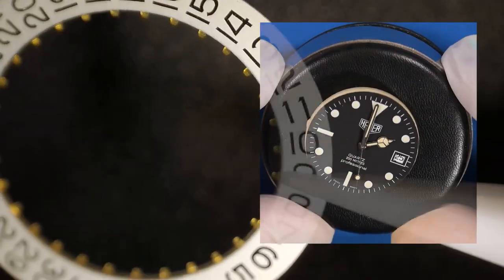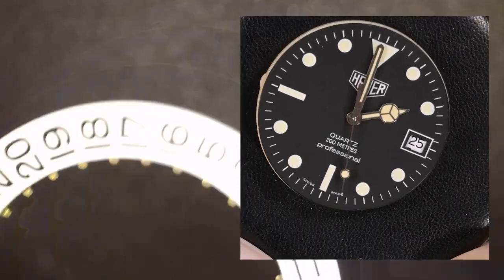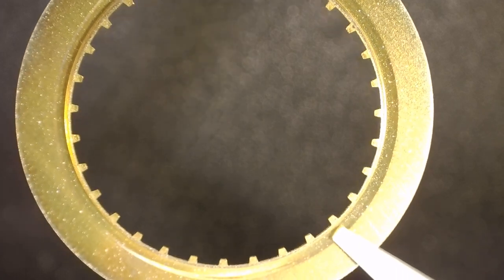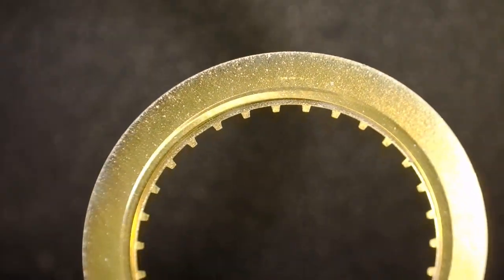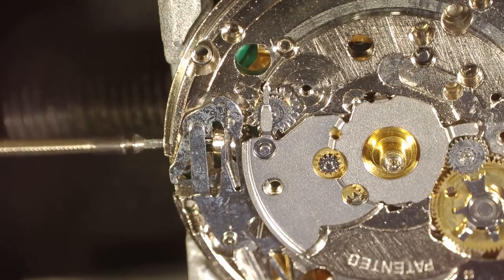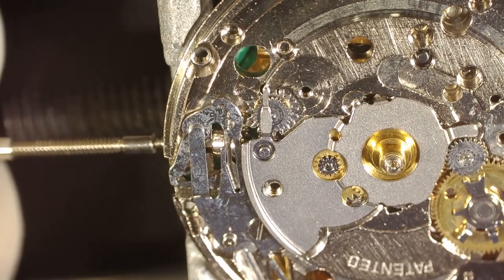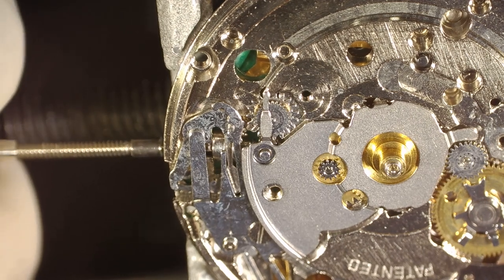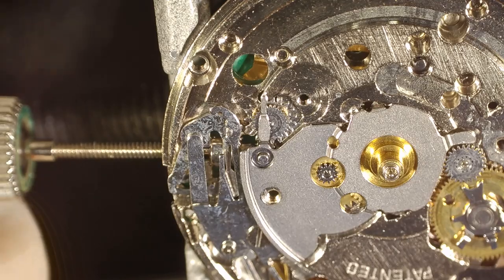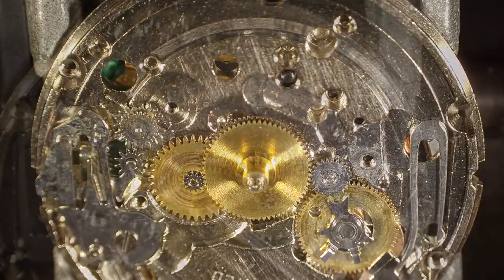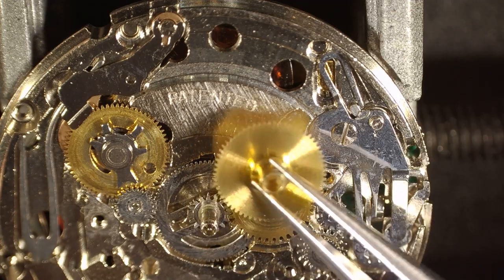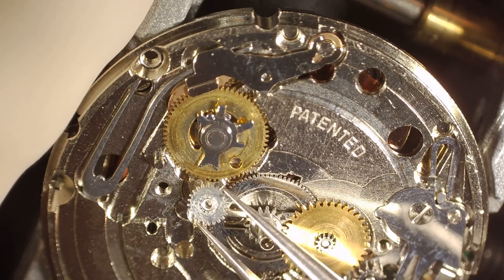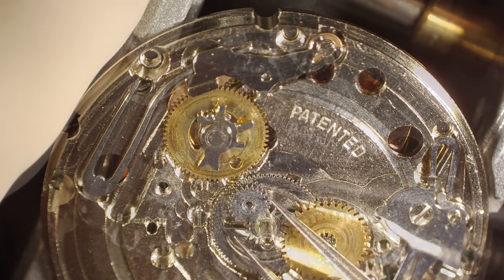Before I started working on the watch, I also noticed that that little date number was kind of not in the window lined up right. And I'm looking at the teeth to make sure that they're all good because I figured they might be binding. So now we can finally see the keyless works. And this is the mechanism that allows you to both set the watch and in this case, you don't have to wind it because it's a quartz watch. From what I can see, everything's pretty clean. I don't see chunks of metal. What I do see is that everything's very dry. So lubricating this watch is important.